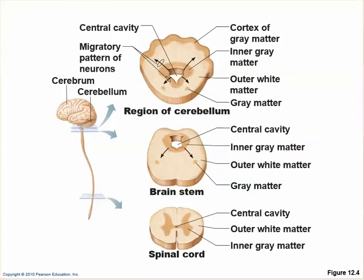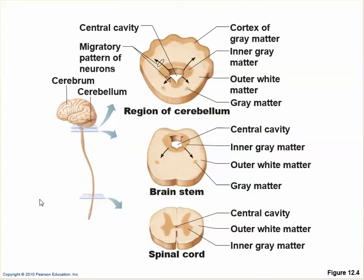There is a transition between the spinal cord and the brain. The spinal cord, being down here with gray matter in the center and a small central cavity — in the brain stem, it looks a lot like the spinal cord: gray matter in the center, some nuclei out, white matter higher. As we get higher into the brain stem, we start to get a cortex of gray matter until we get all the way up to the cerebrum, where the cortex is all gray matter.